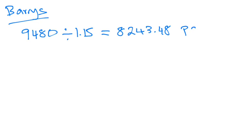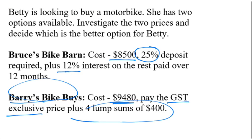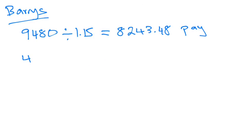So that's how much Betty would pay at the start. Then we're told it would have four lump sums of $400. So we would do four lots of $400, which is $1,600.